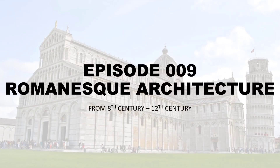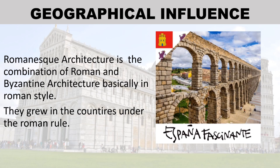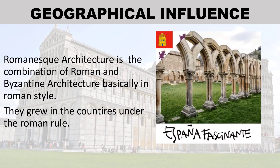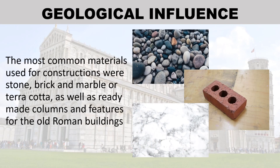Episode 9: Romanesque Architecture, from the 8th century to the 12th century. Geographical influence: Romanesque architecture is the combination of Roman and Byzantine architecture. Basically in Roman style, they grew in the countries under Roman rule.